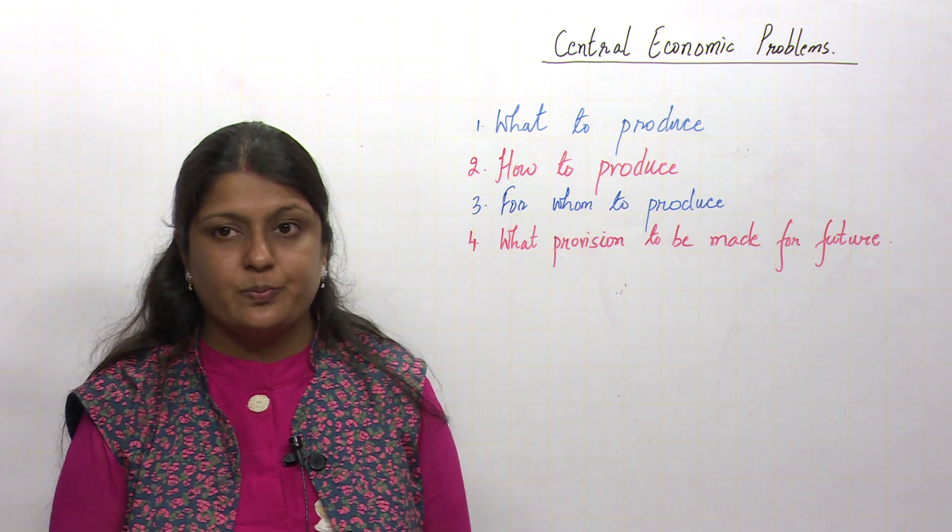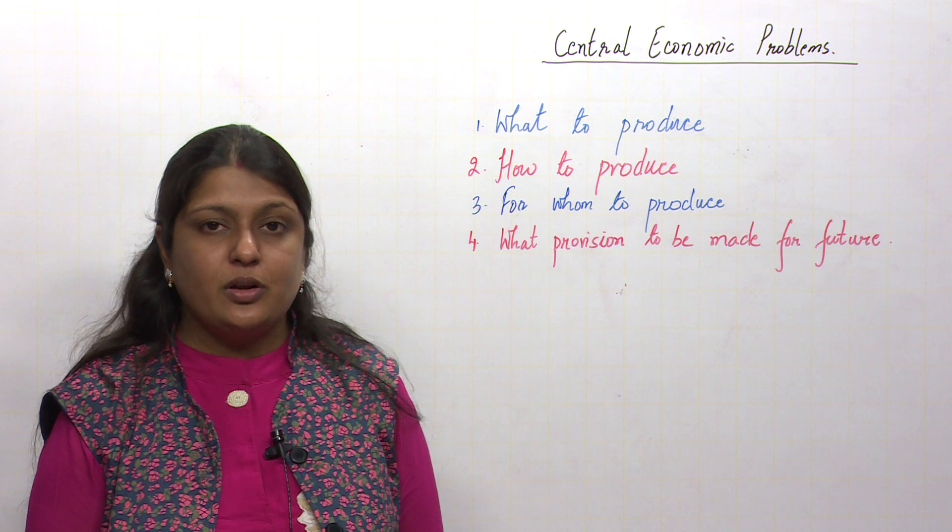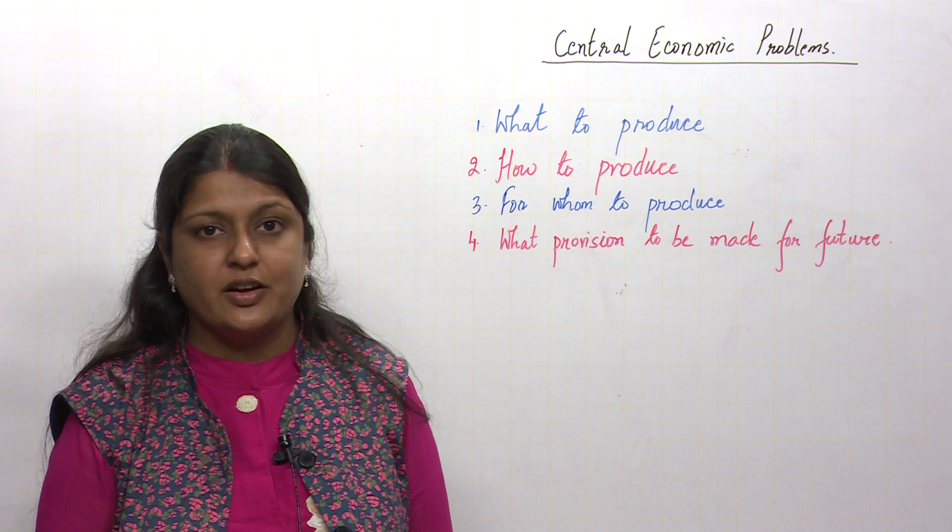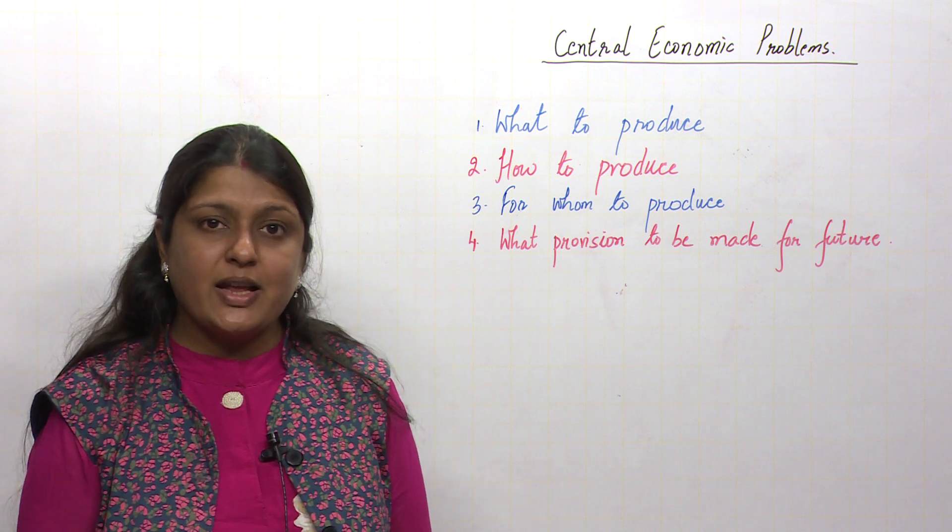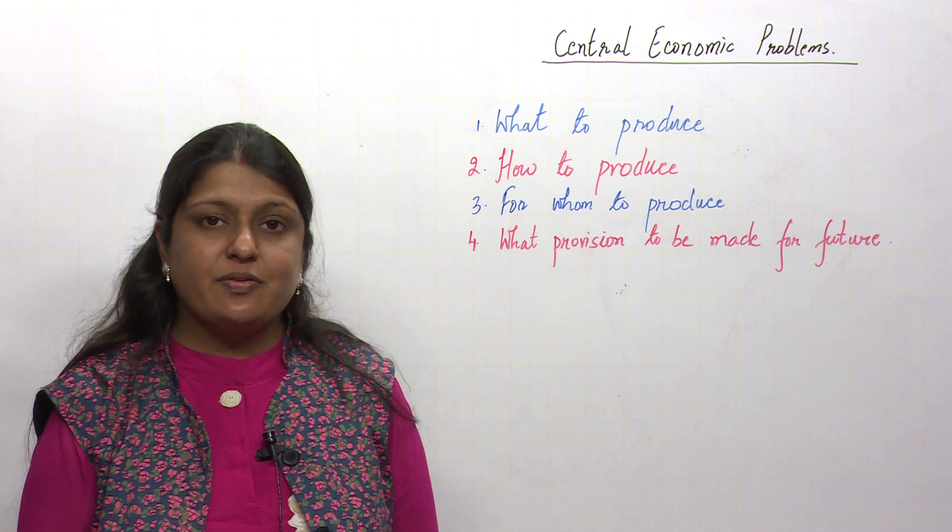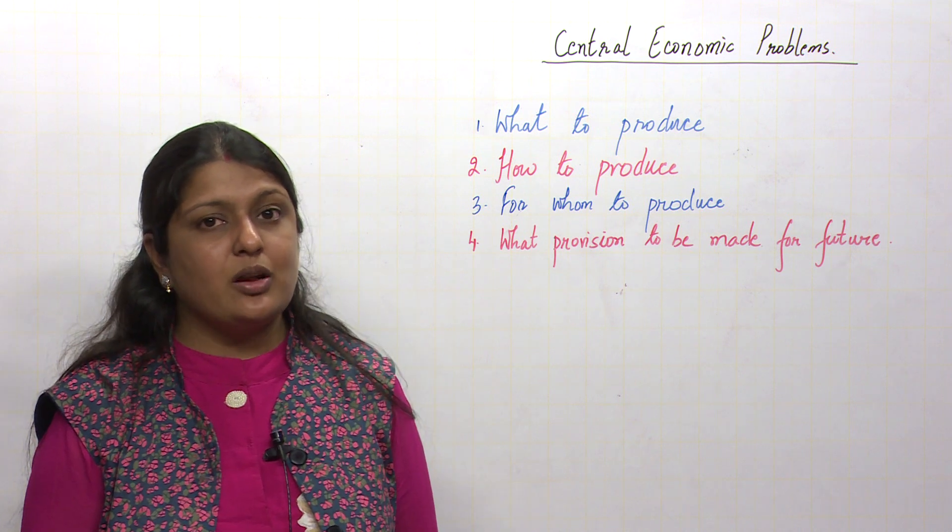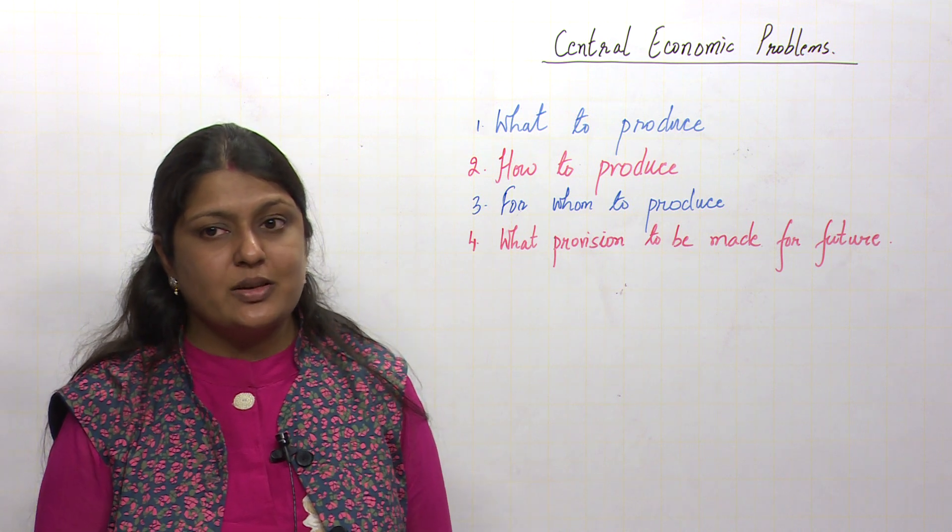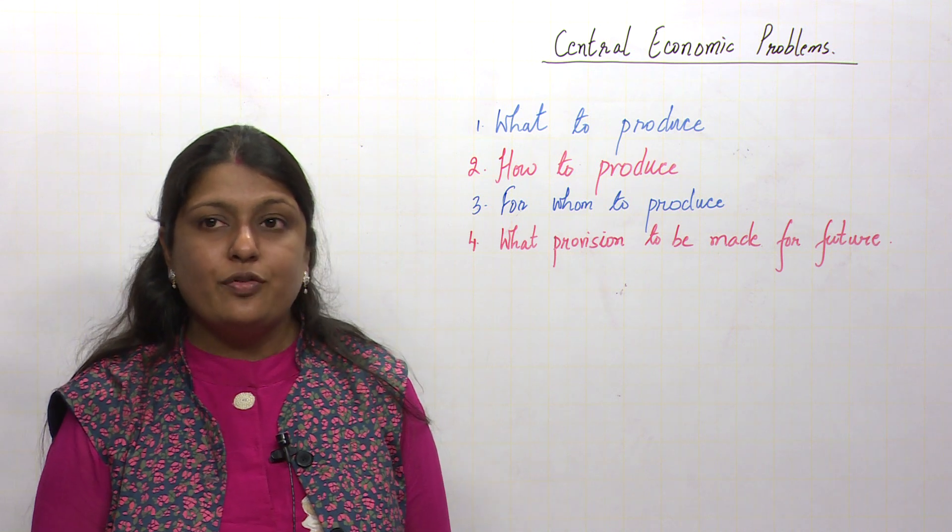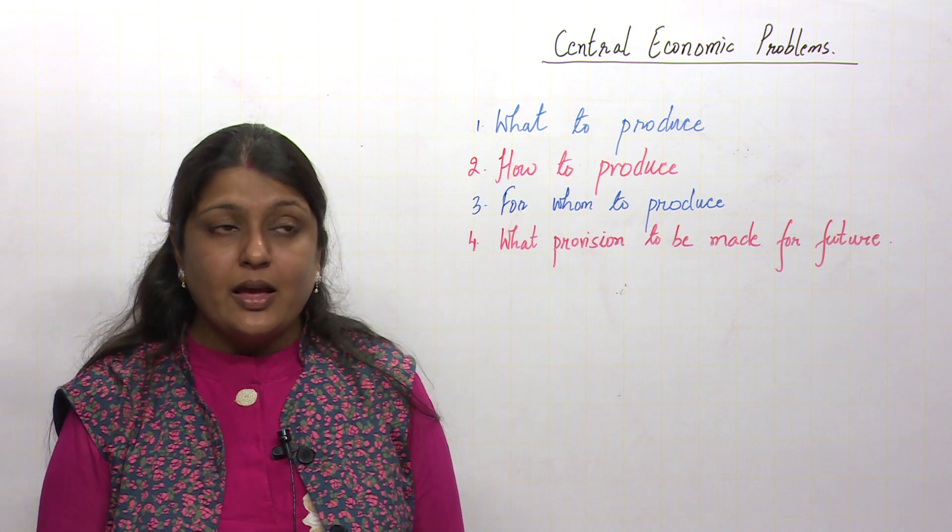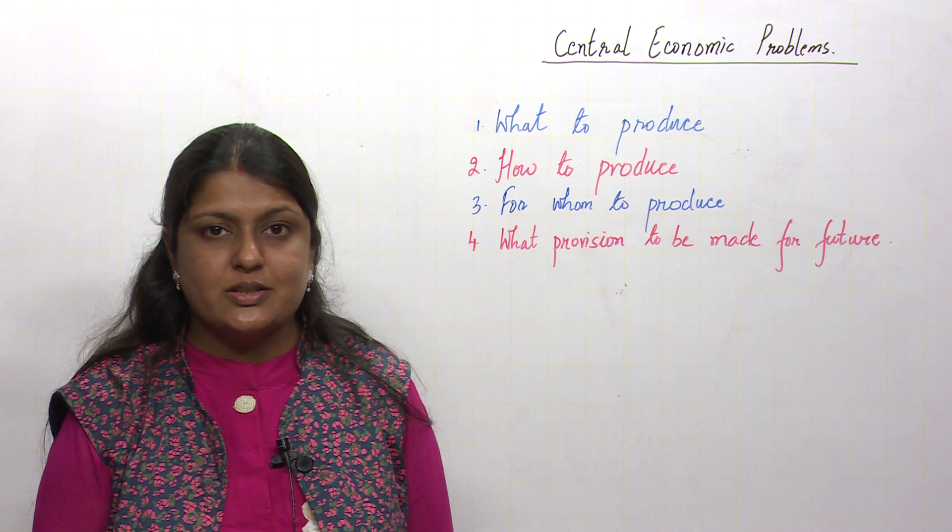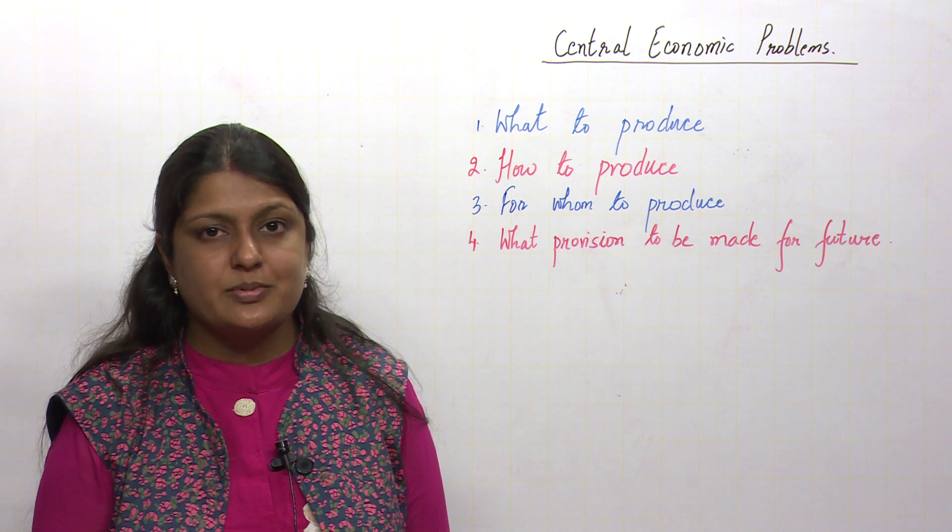For whom to produce? Usually, those people who have the spending capacity and ability to pay for goods get the production. But this is not always true, because in capitalist economies and socialist economies where the government provides welfare, they have provisions like freedom from hunger. For whom to produce is a debatable thing, but usually consumers who are willing to pay get the production.